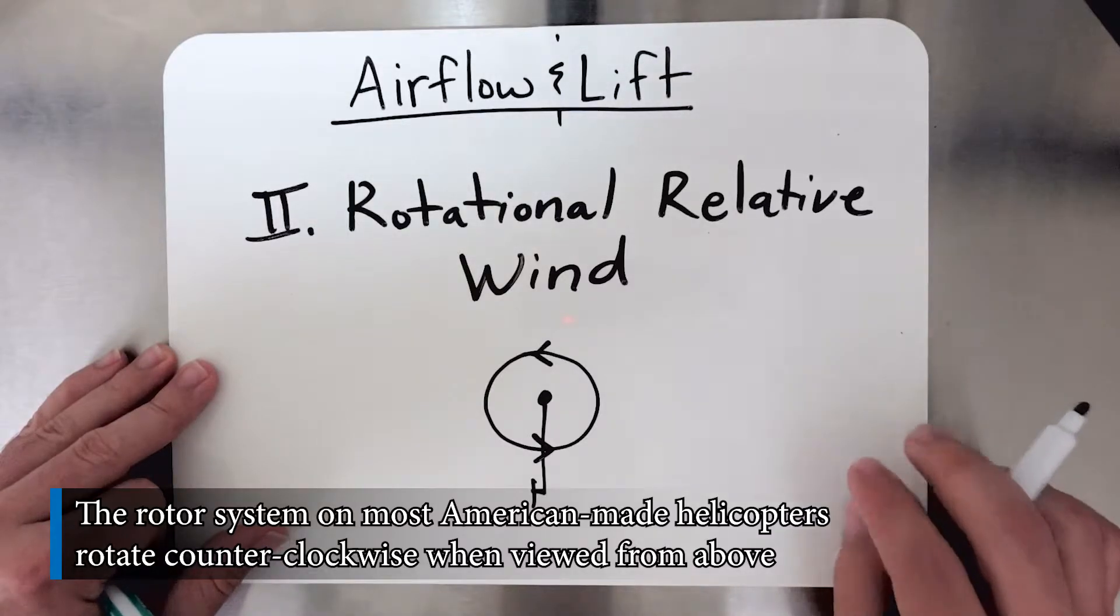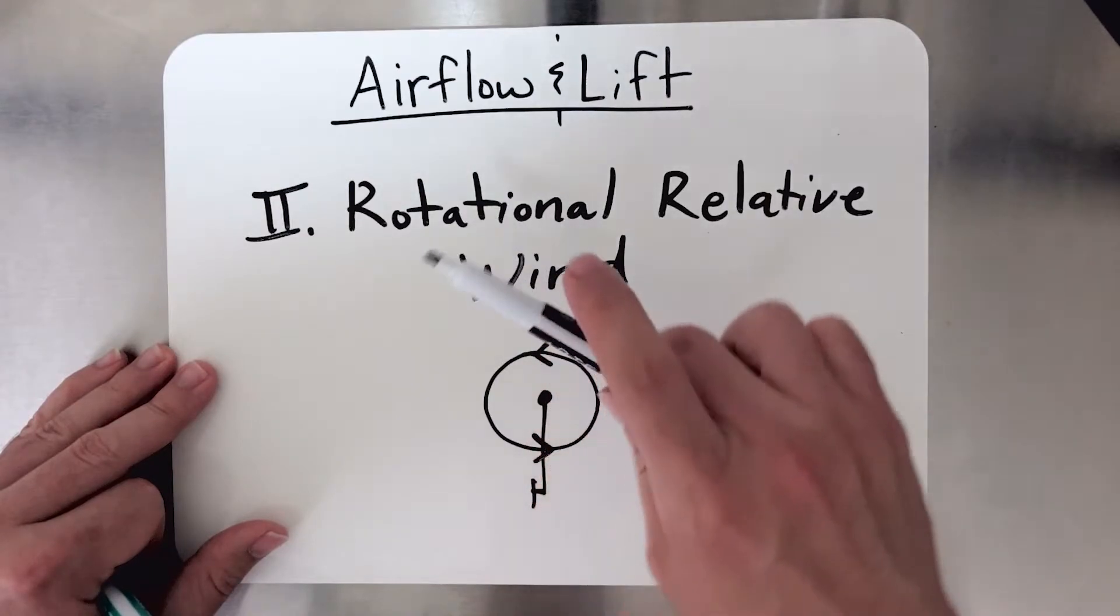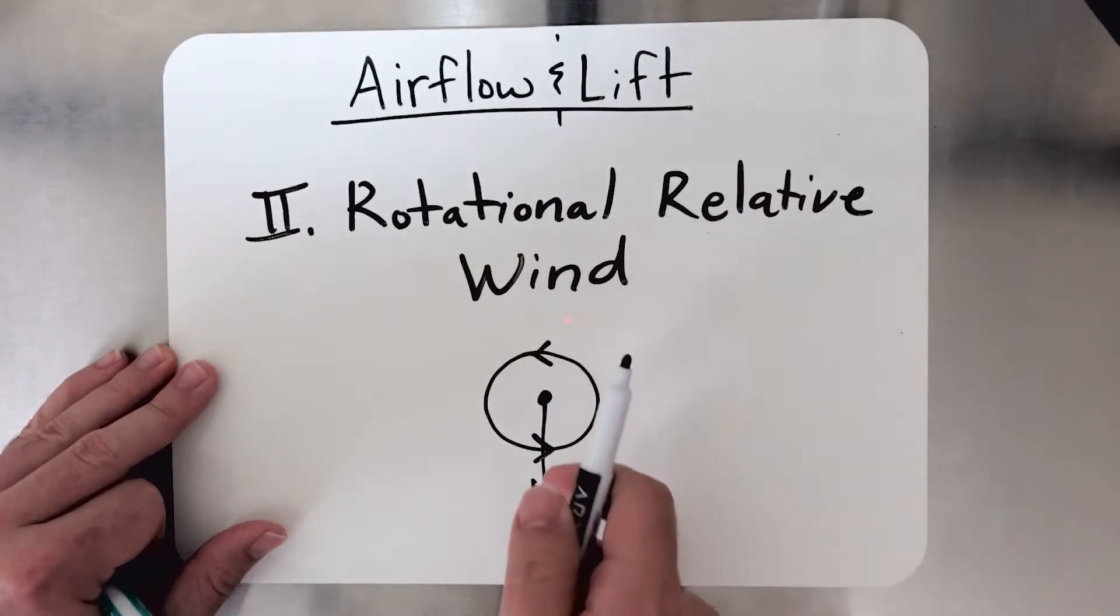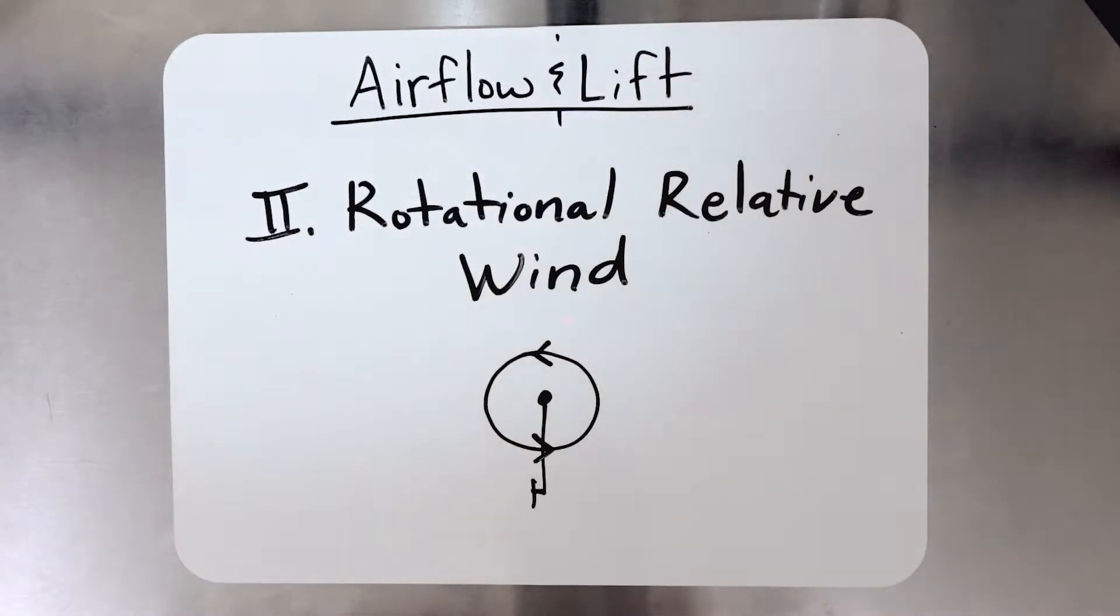Now that means that as the blades rotate, there's a constant change in direction of the relative wind uniformly across the rotor system. That's all rotational relative wind is.